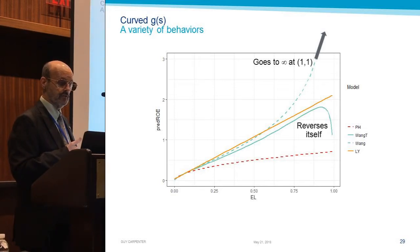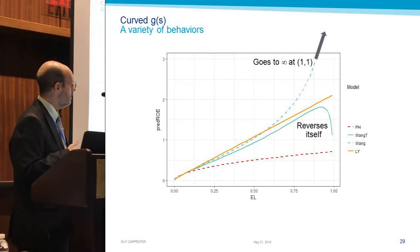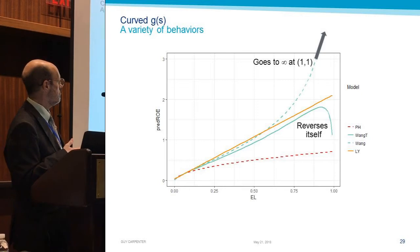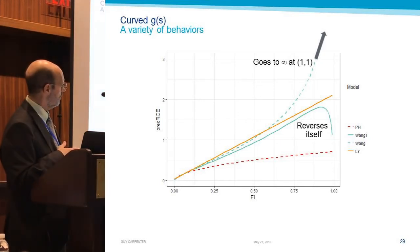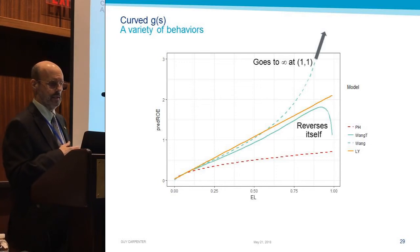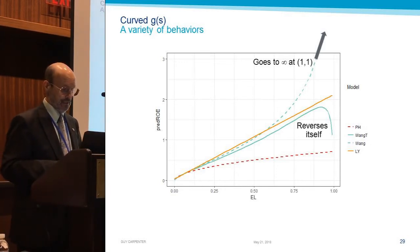The proportional hazards, the red gash one on the bottom there, nothing to complain about there. We've got a nice gentle curve, goes up pretty reasonably. And then the yellow one, our linear yield model, that is a straight line. And that is not a coincidence. It was designed to be a straight line.